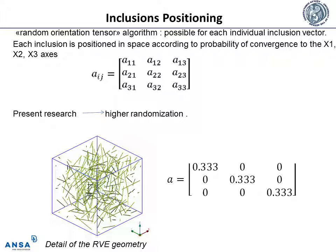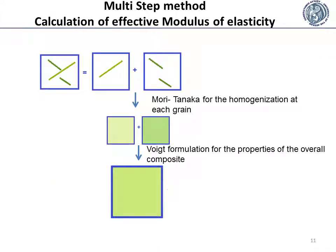A sophisticated method of fiber positioning used in the present research is the Random Orientation Tensor. With the application of the Random Orientation Tensor, it becomes possible for each individual inclusion to have its own position and orientation. Each inclusion is positioned in space according to probability of convergence to the x₁, x₂, and x₃ axes. In order to achieve higher randomization of inclusion positioning in the cube, the orientation tensor components A₁₁, A₂₂, and A₃₃ were set at 0.33, with all other components left as null.